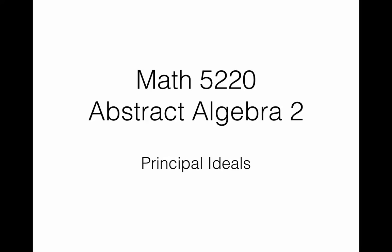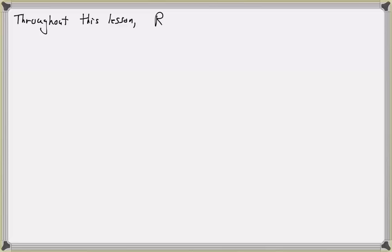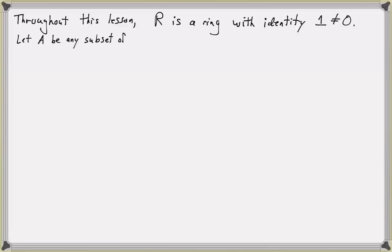The focus of this lesson will be on principal ideals. Throughout this lesson, we're going to assume that R is a ring with identity 1, not equal to 0. So whenever we say R is a ring, it will be a ring with identity. We're going to talk about ideals generated by a subset, and then in particular, a subset with just one element.